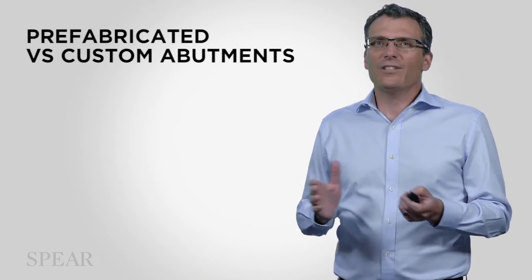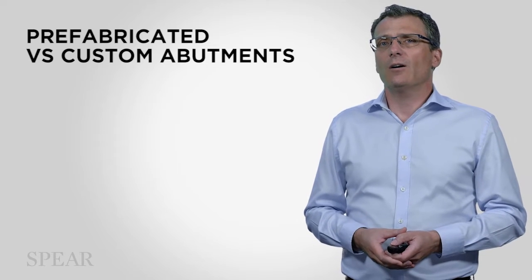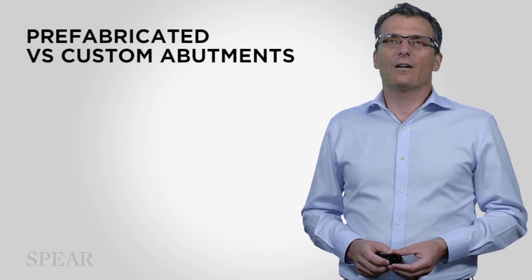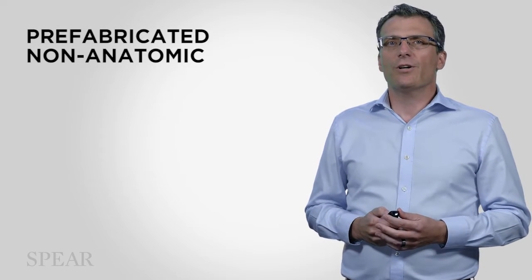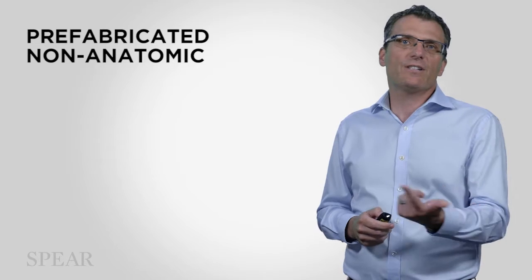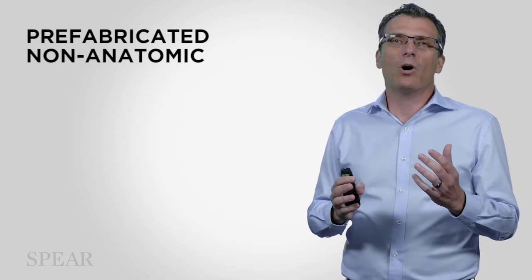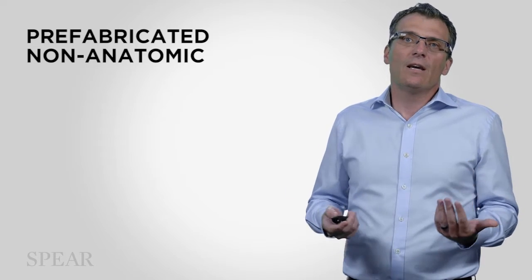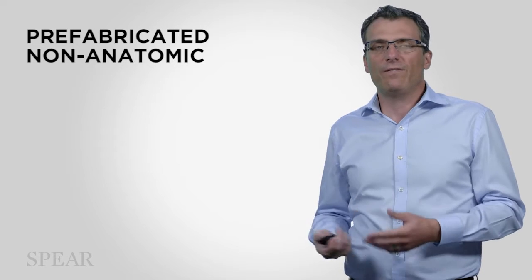Let's break it down between prefabricated abutments and custom abutments. Looking at prefabricated or stock implant abutments first, the first variety is a non-anatomic design. These were really common a few years ago. You'll look 360 degrees around — there's a margin — but it really doesn't look like a crown preparation. It doesn't look like a tooth. It's a cementable prefabricated abutment.